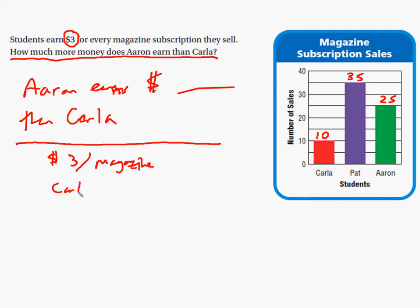Carla sells 10 magazines and Aaron sells 25 magazines. I'm not going to write down how many magazines Pat sells because, from my answer statement, I only care about Aaron and Carla. What a lot of kids will do is subtract 25 minus 10 and get 15 — but that is wrong. We're not looking for the number of magazines, we're looking for the amount of money.